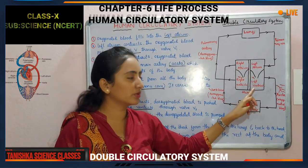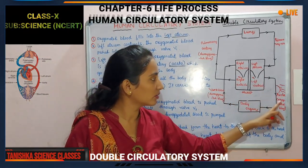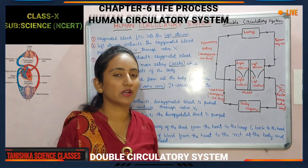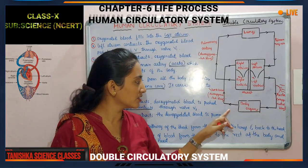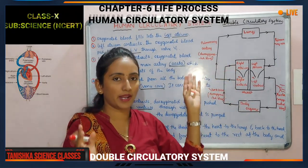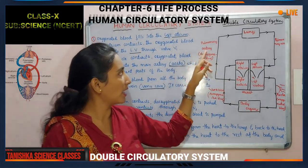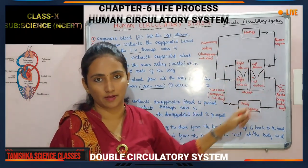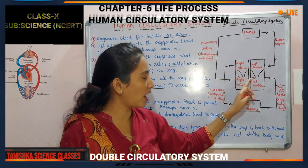To summarize the complete cycle: oxygenated blood from the lungs comes to the left atrium; the left atrium contracts and pushes blood down to the left ventricle; the left ventricle contracts with high pressure and transfers blood through the aorta to every cell of our body. Oxygen is used by the body, blood becomes deoxygenated, and the deoxygenated blood transfers through the vena cava back to the right atrium. Right atrium contracts, blood comes to the right ventricle, then through the pulmonary artery it goes to the lungs for purification. This is one complete cycle of the circulatory system.